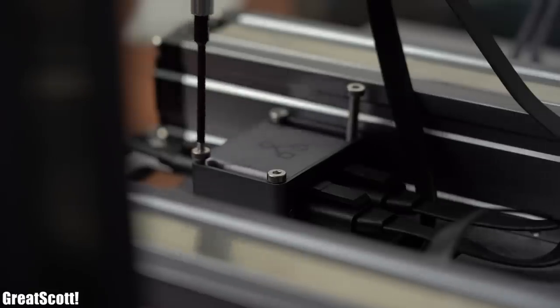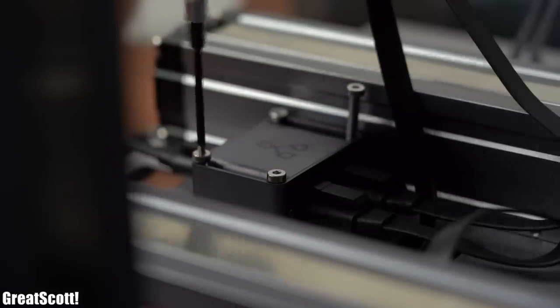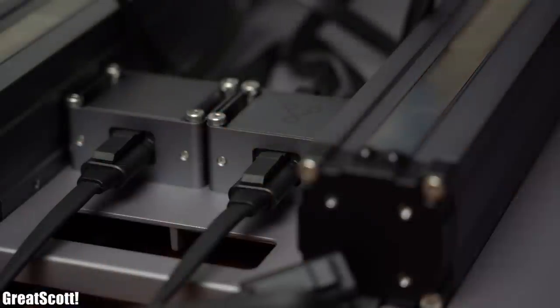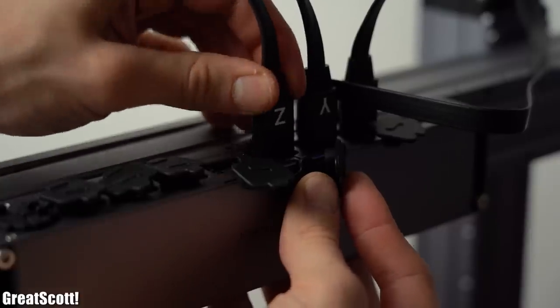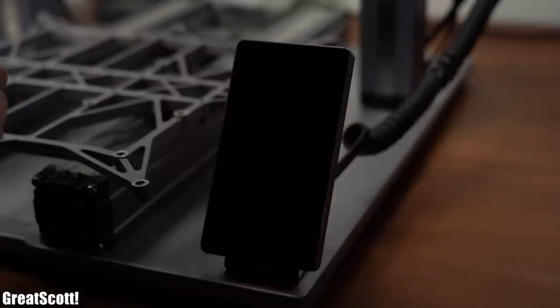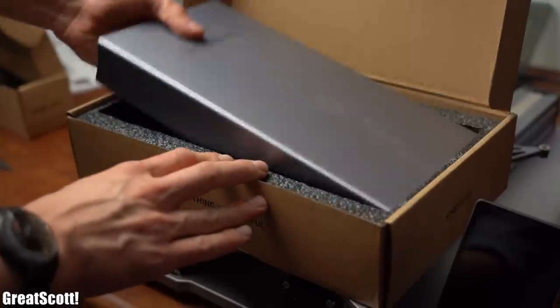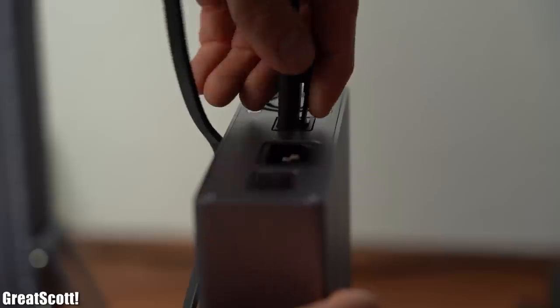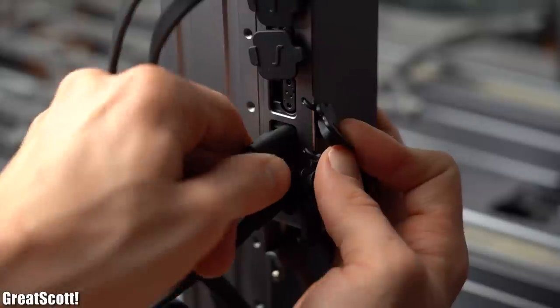So I moved on by adding the Y and Z-axis adapters and cables to the system which I then plugged into the main controller that I secured beforehand to one Z-axis. After then also hooking up the touchscreen it was time to unpack the power module which I also promptly hooked up to the main controller.